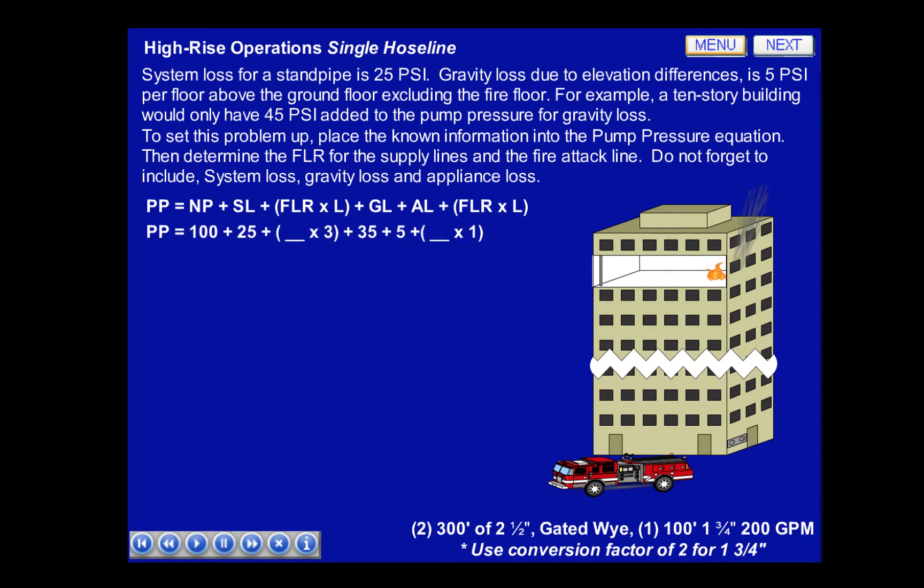In this problem, pump pressure equals 100 PSI for a fog tip, system loss is 25 PSI, we'll solve for the friction loss times 3 for 300 feet of hose, the gravity loss is 35 PSI, and appliance loss is 5 PSI, and we'll solve for the friction loss rate times 1 for 100 feet of hose on the fire attack line.